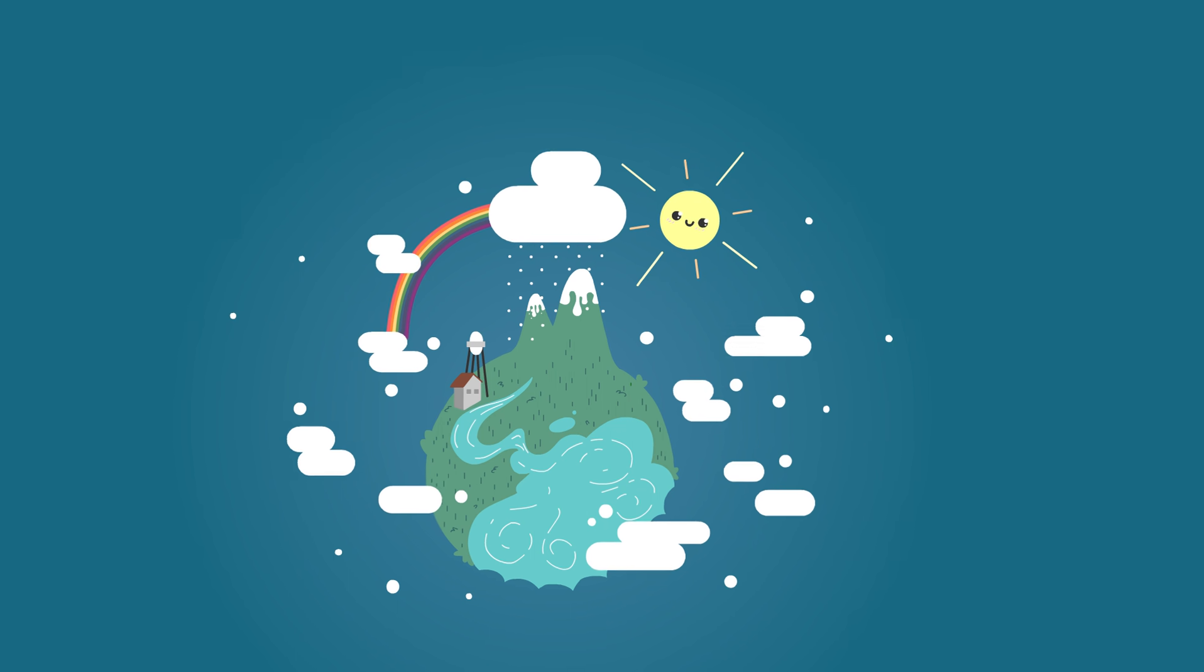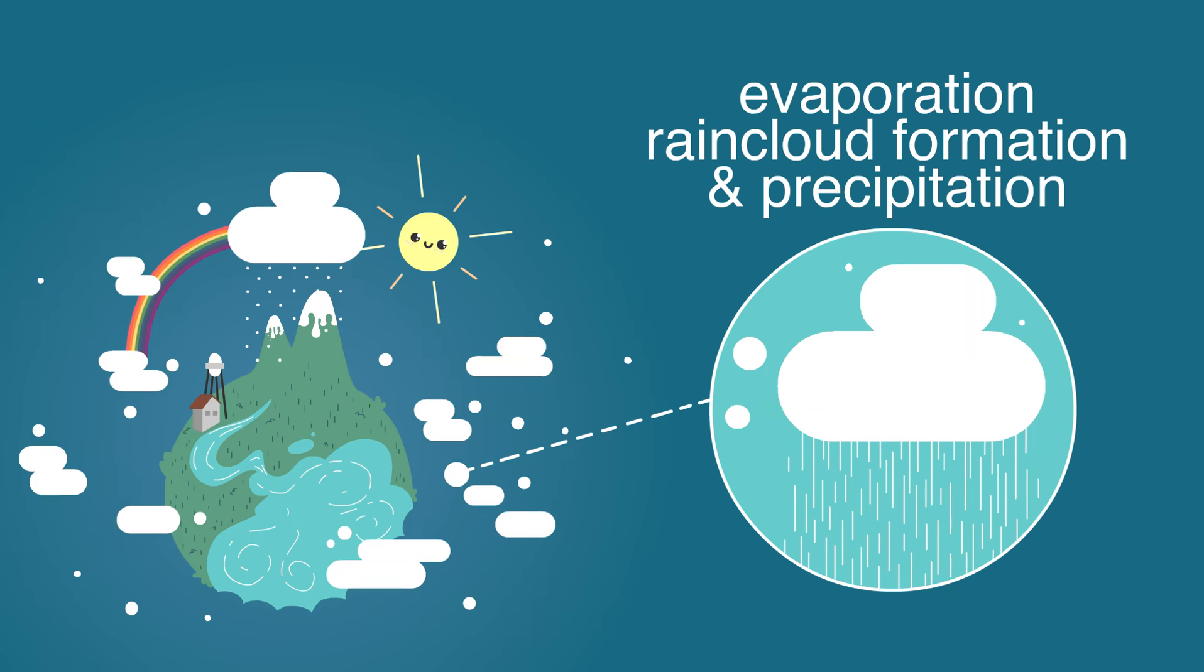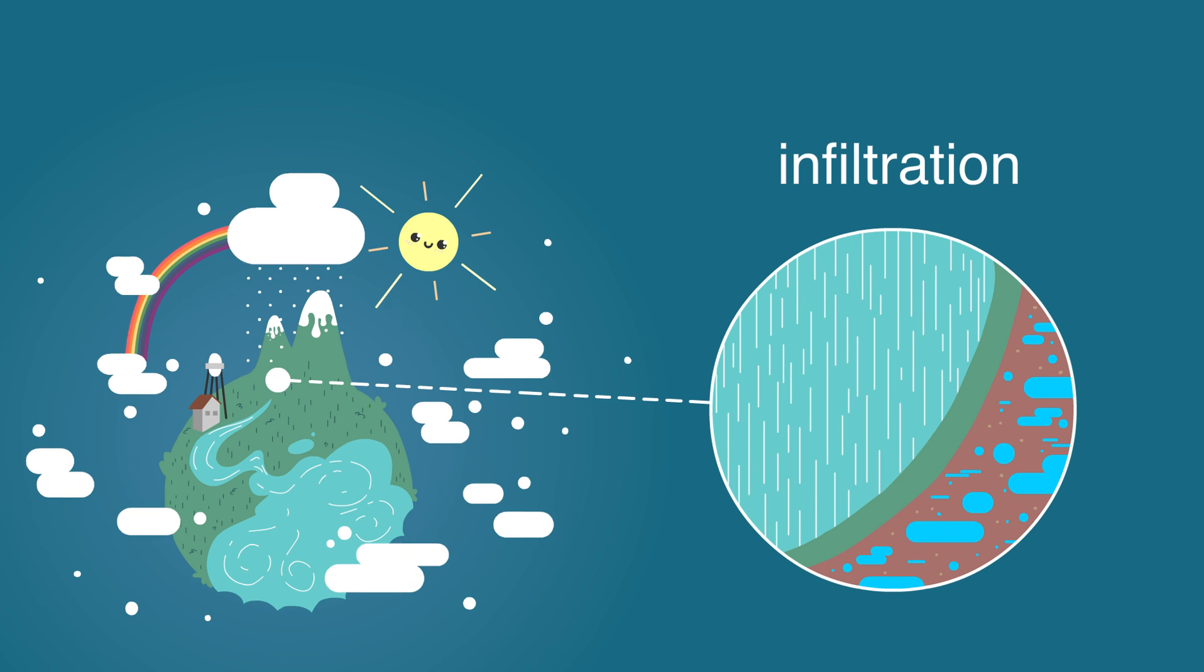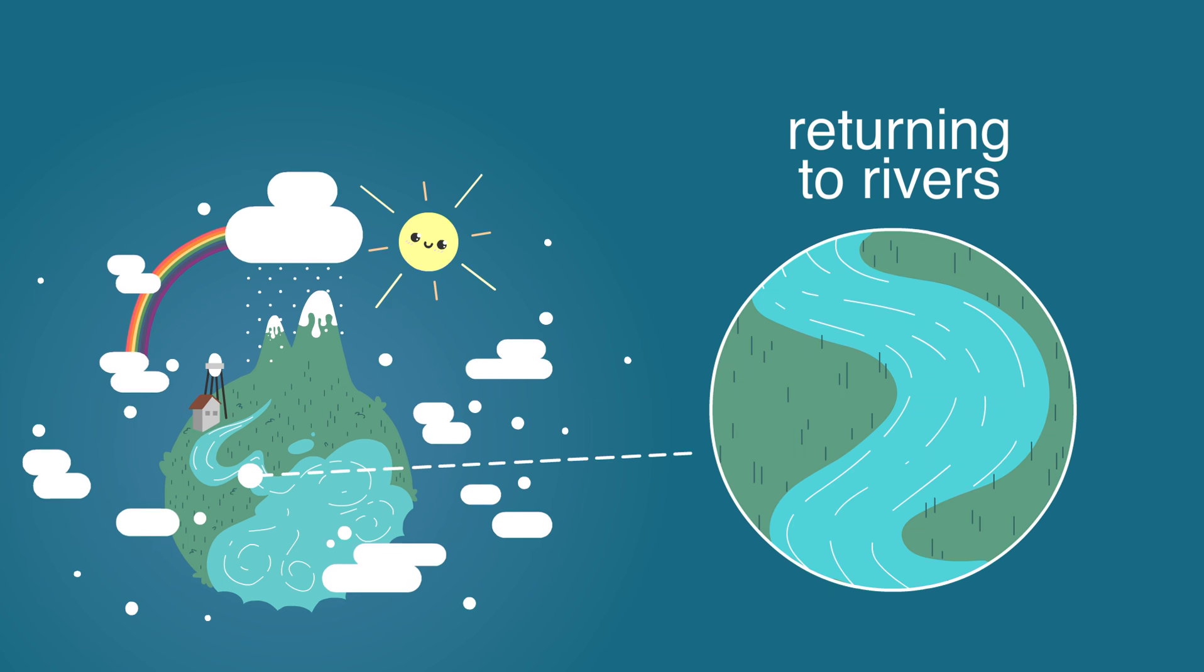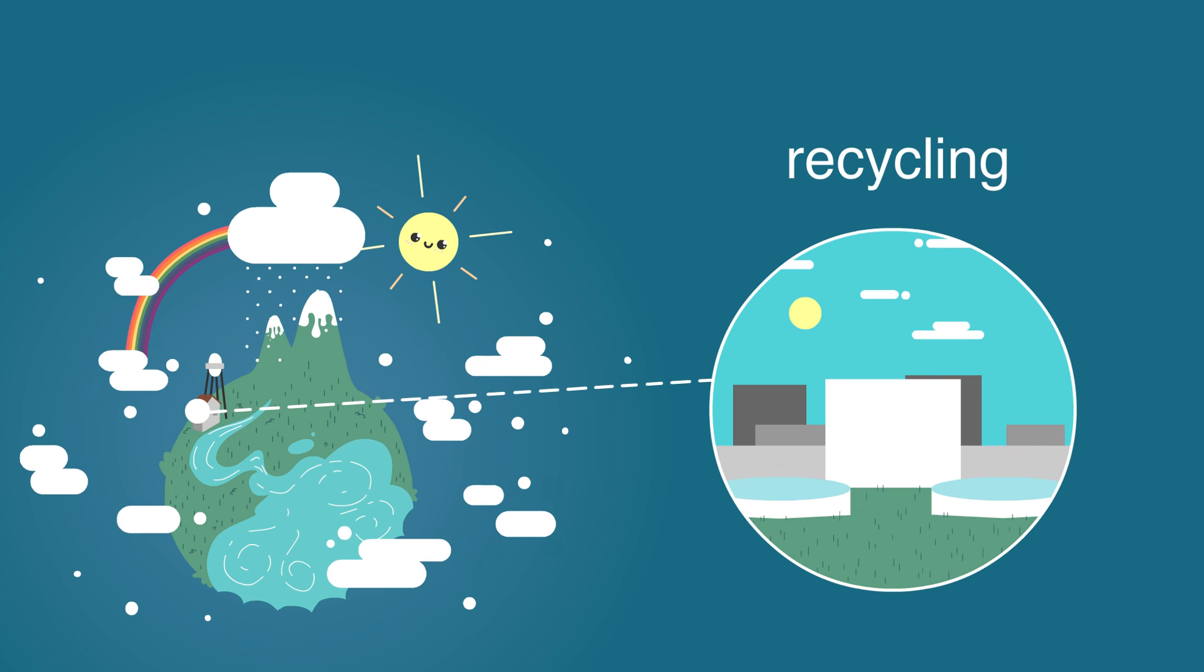How does water flow through the water cycle? Evaporation, rain cloud formation, and precipitation. Infiltration through the soil, called groundwater recharge. Returning directly to rivers. Recycling through water treatment plants.